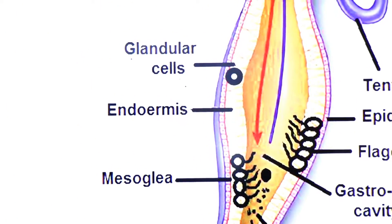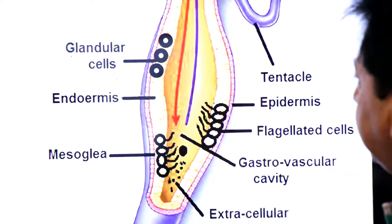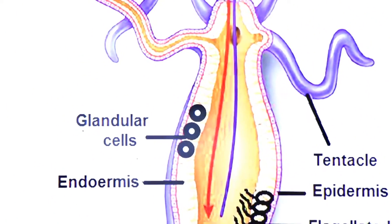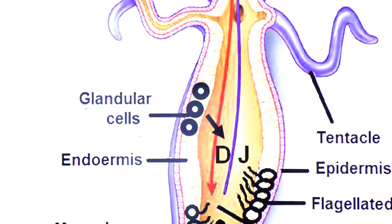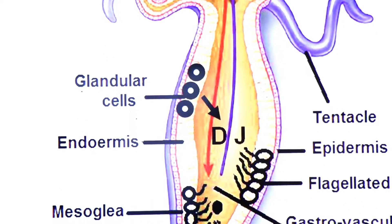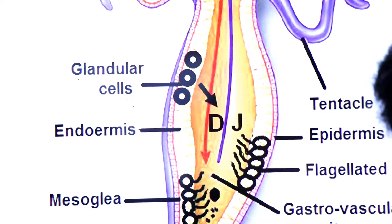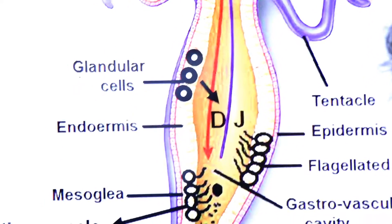Glandular cells release digestive juice, which helps in extracellular digestion. Small particles of food are mixed with digestive juices by the movement of flagellated cells, which also help distribute the food throughout the cavity.